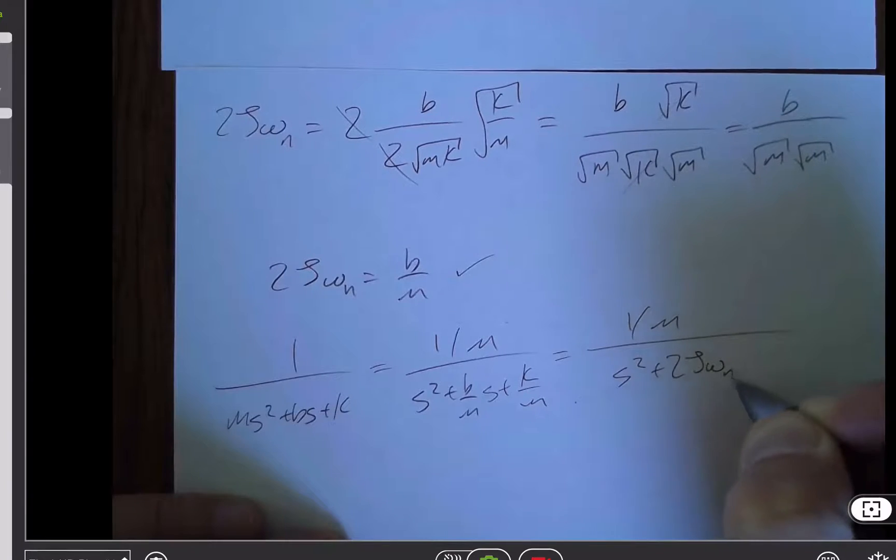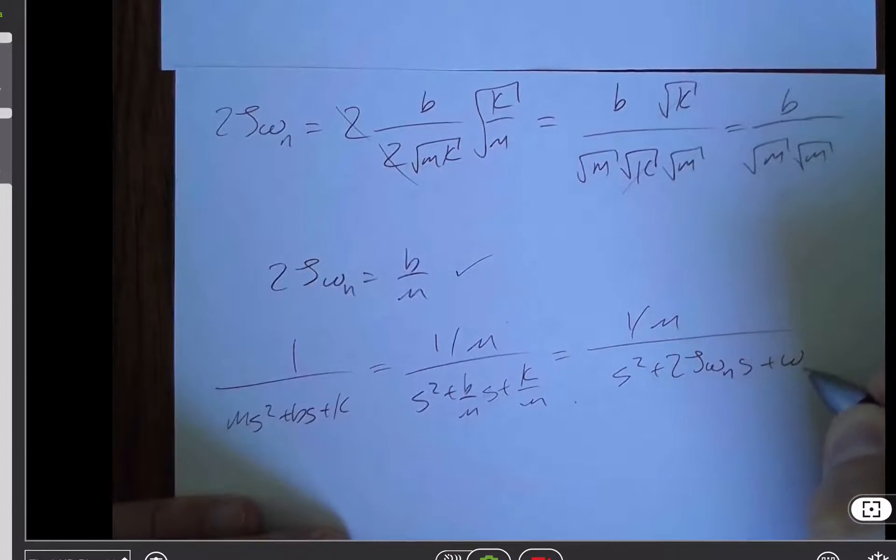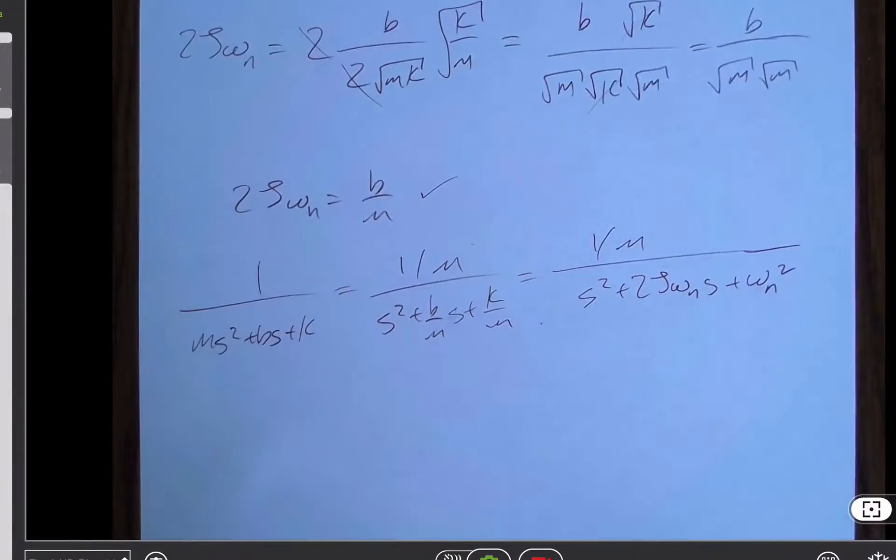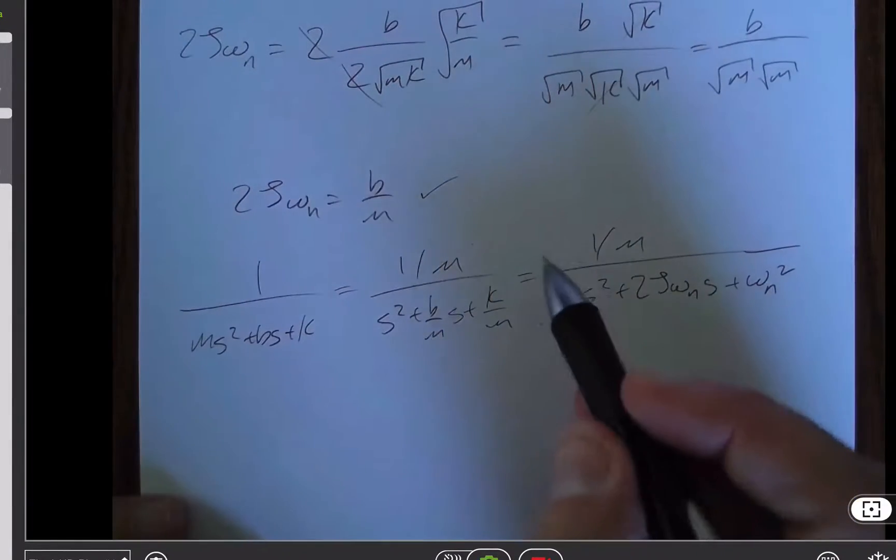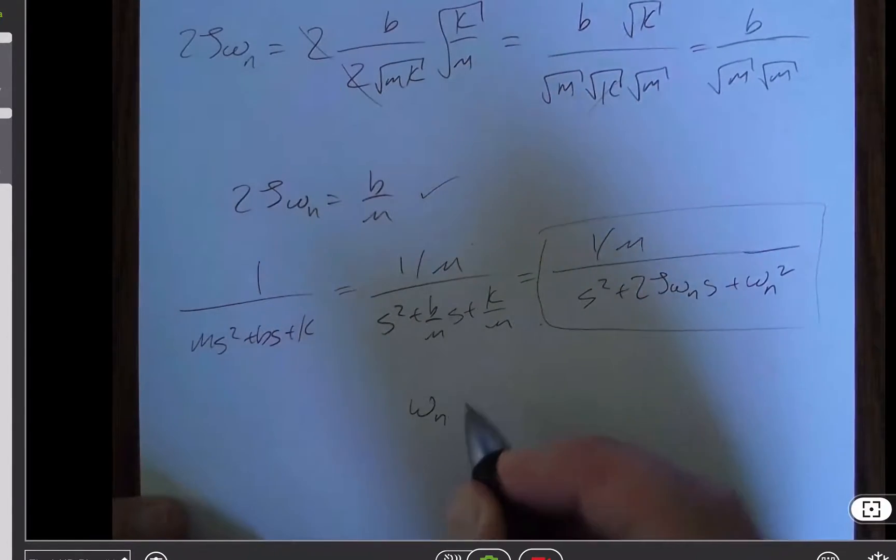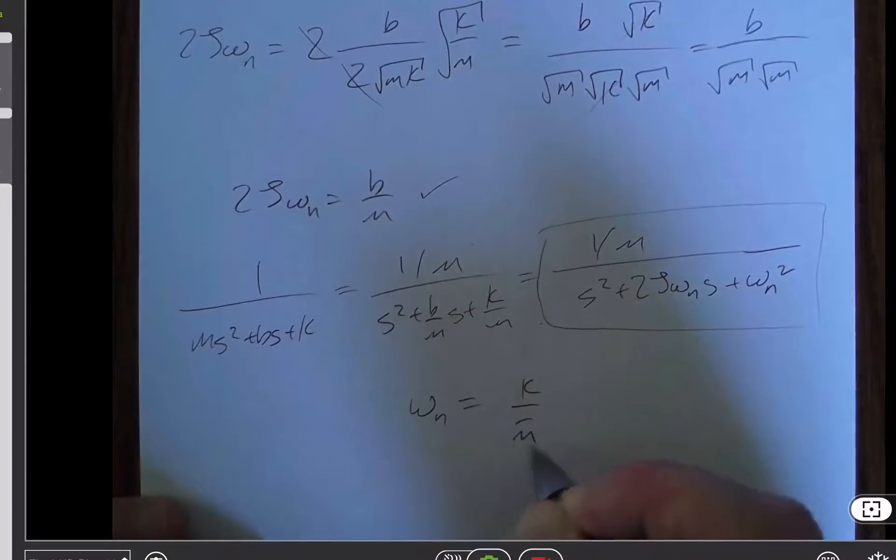Or we can kind of beat it into our heads until it becomes second nature. I don't like to say memorize, but I just know that that is the correct form. And so, yeah, get comfortable with that form. And again, the definitions, omega n is root k over m. Hopefully that makes sense to you from physics.